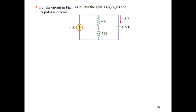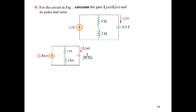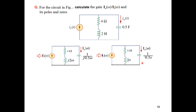In the next example, we have to find the current gain — current output divided by current input. We use the same technique: convert into the frequency domain using jωL and 1 over jωC, then replace jω with s. To find the current in a branch, we apply the current divider rule (CDR): total current multiplied by the opposite arm divided by total resistance.